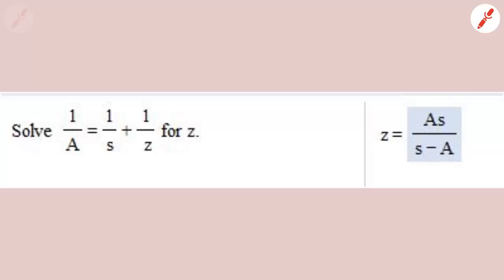Here we have the formula 1 over A equals 1 over S plus 1 over Z, and we're solving for Z. So this is a rational equation. What I'm going to do is multiply through by the LCD. That is the number that will cancel out the A and the S and the Z. So my LCD is going to be A, S, Z.